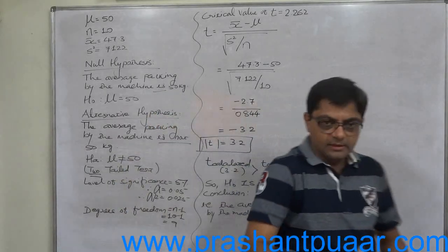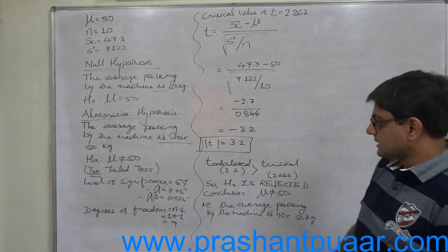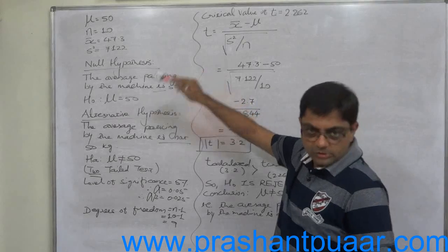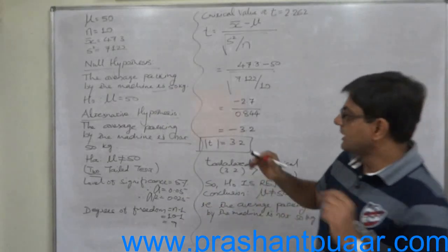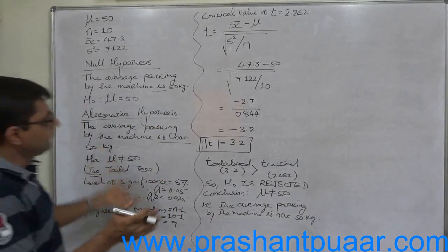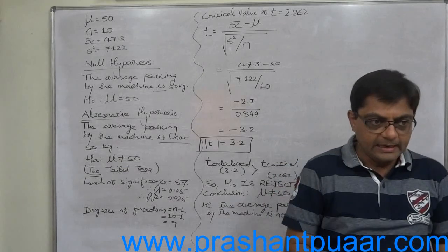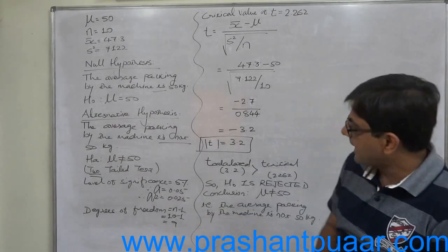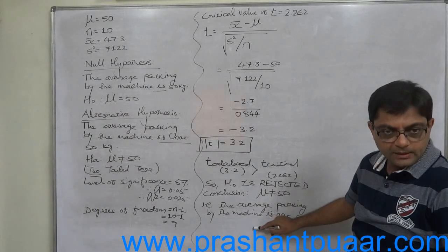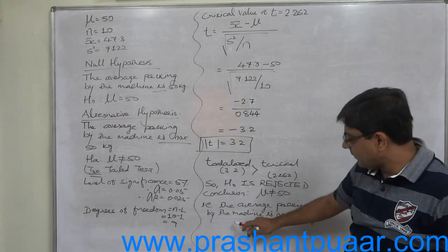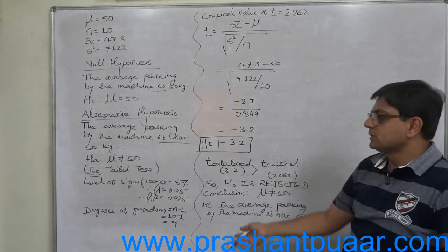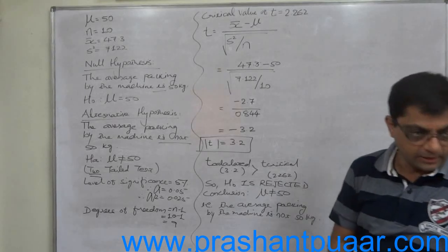So conclusion comes from the alternative hypothesis: mu is not 50. That means the average packing by the machine is not 50 kilograms. In the same question, a different hypothesis can be asked: Can we conclude that the machine is defective?